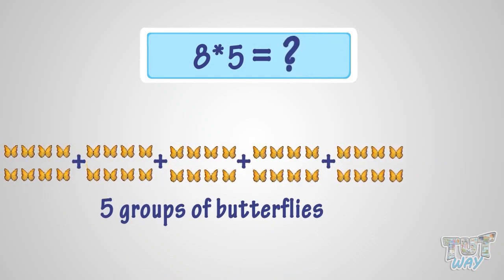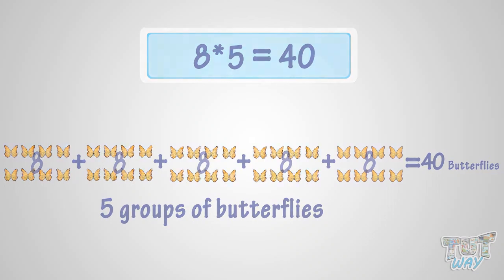What is 8 multiplied with 5? It is the same as five groups of 8 butterflies. So it is 40 butterflies. That is, 8 multiplied by 5 is 40. Good!